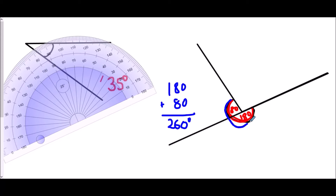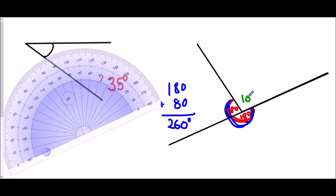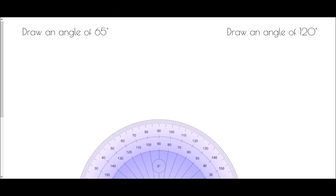The other option is to actually measure the angle that we don't want — the non-reflex part. Using the inside numbers, where zero is, going 0, 10, 20 all the way around, it comes to 100 degrees. For a reflex angle, the entire turn is 360 degrees, so another option is to subtract: 360 take away 100 gives me 260 degrees. I get the same answer from both methods.